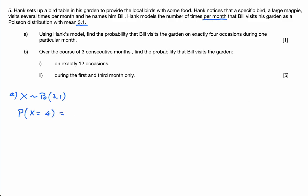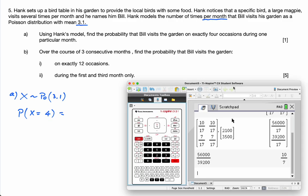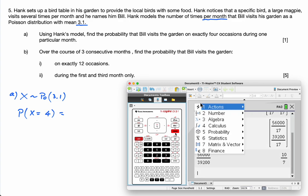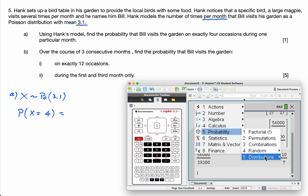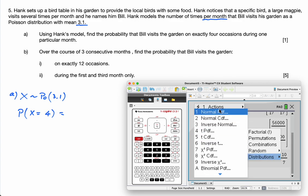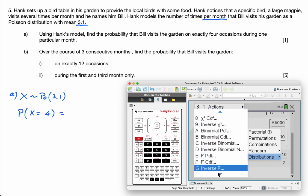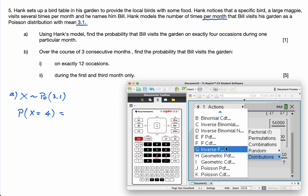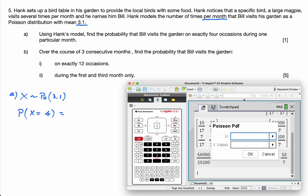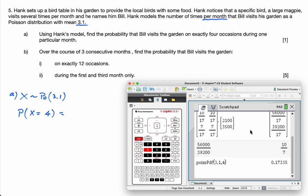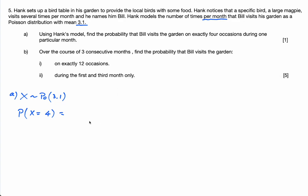And the answer is, use your calculator. So, menu, probability, distributions, I need to find Poisson PDF. 3.1 is lambda, and 4 is the X value. Press Enter. And again, 0.17335.